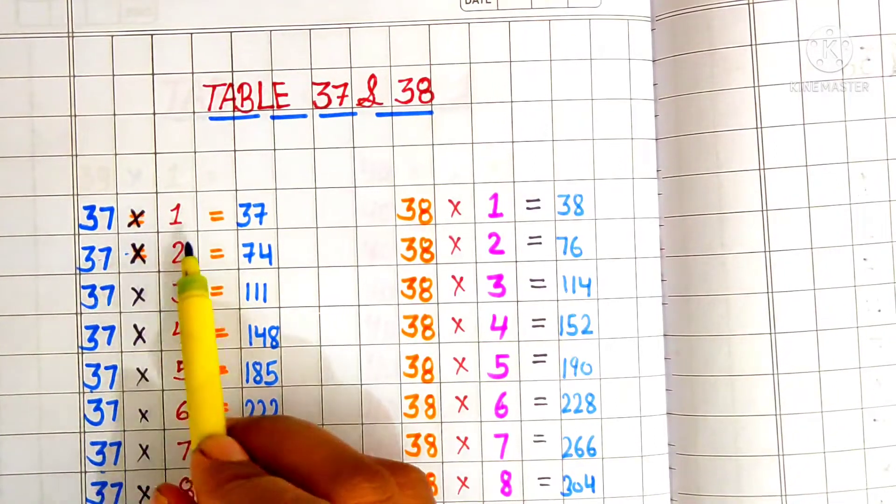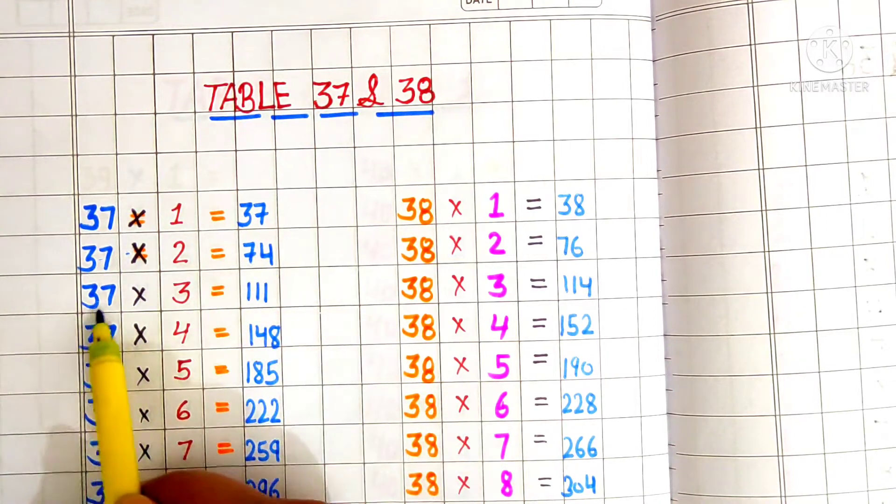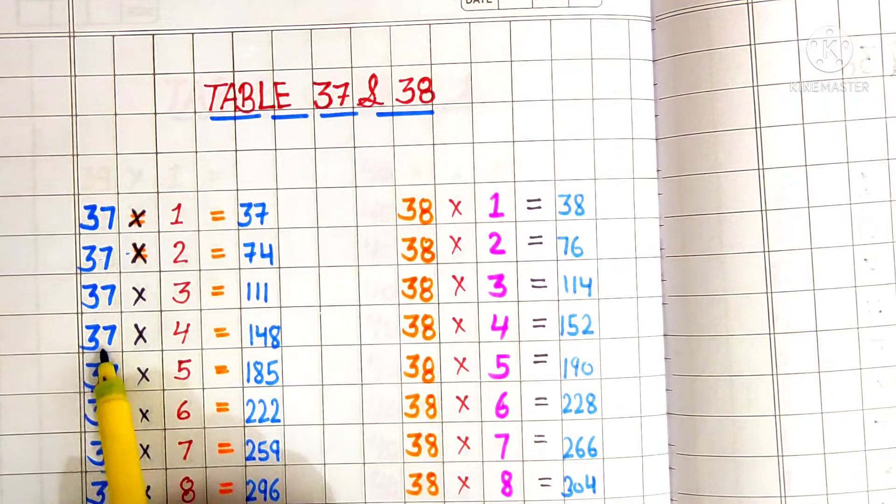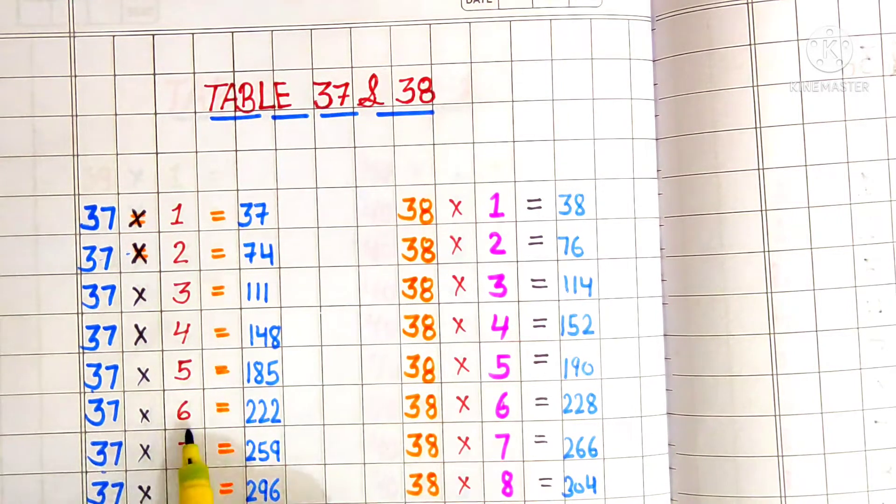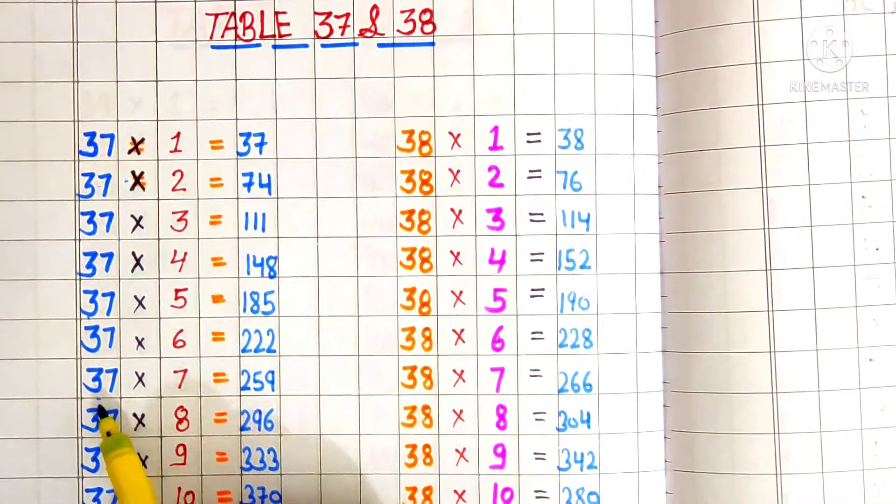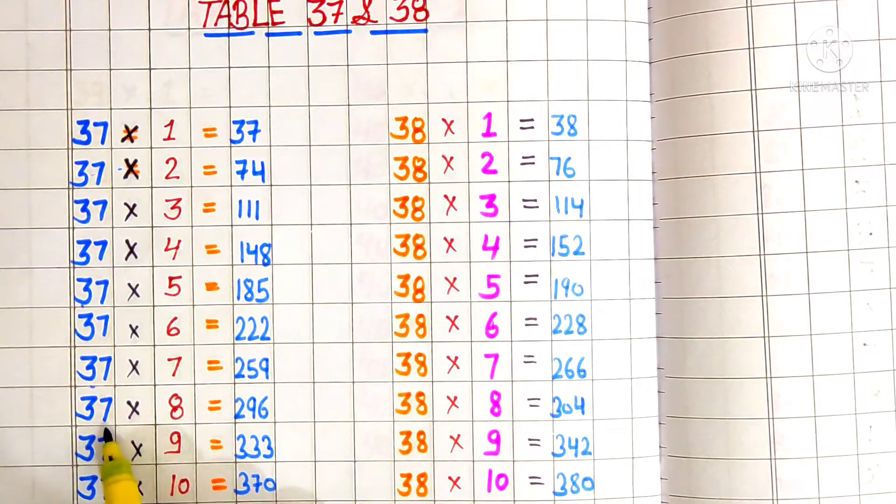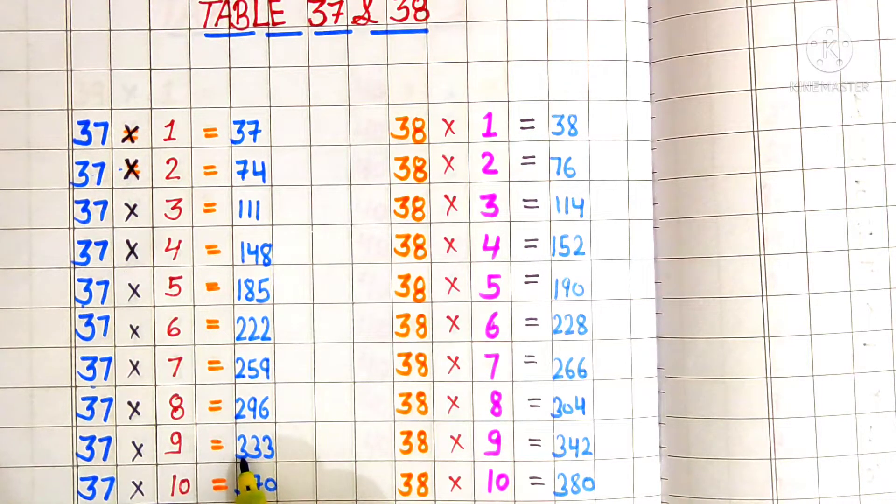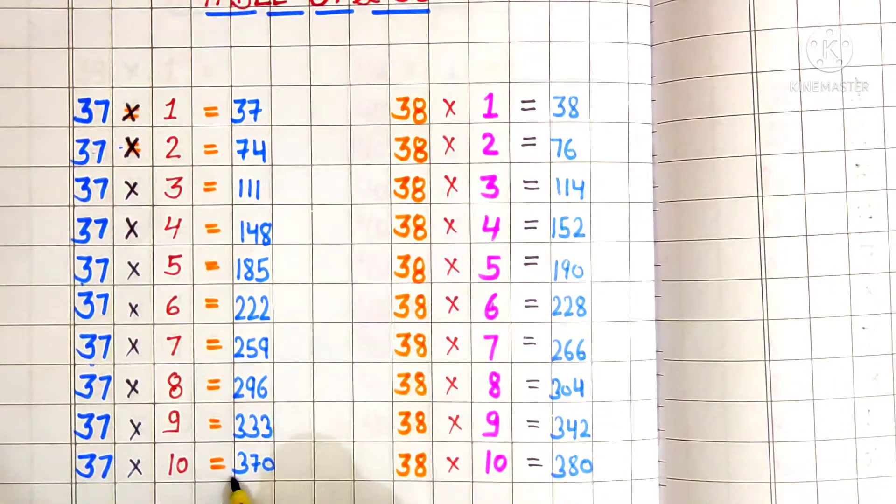37 ones are 37. 37 twos are 74. 37 threes are 111. 37 fours are 148. 37 fives are 185. 37 sixes are 222. 37 sevens are 259. 37 eights are 296. 37 nines are 333. 37 tens are 370.